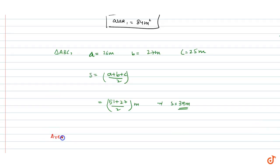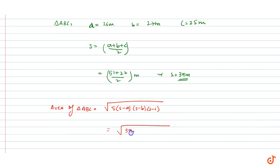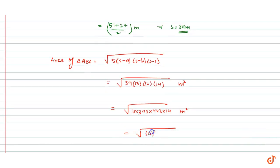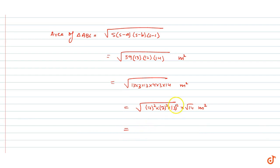Now we find the area of triangle ABC using Heron's formula: area equals under root of S into (S minus A) into (S minus B) into (S minus C). That is under root of 39 into (39 minus 26) into (39 minus 27) into (39 minus 25), which is under root of 39 into 13 into 12 into 14. Simplifying: under root of 13 squared into 2 squared into 3 squared into 14, giving 13 into 6 into root 14, which is 78 root 14 m squared.